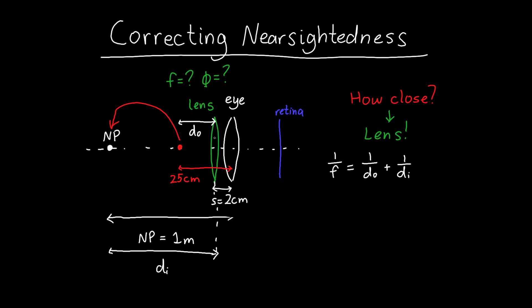Now here, our object distance is just 25 centimeters minus the spacing between our lens and our eye. So our object distance is 23 centimeters.